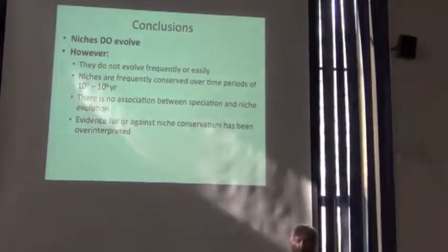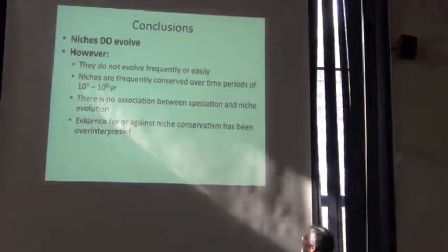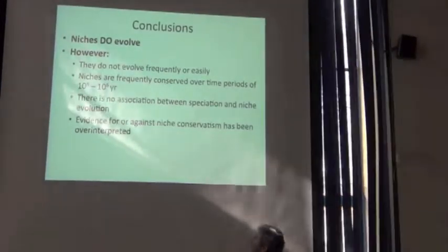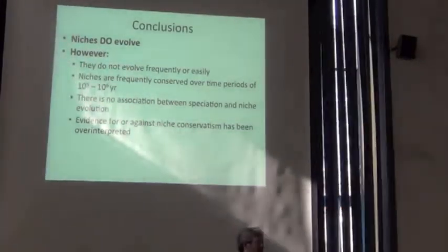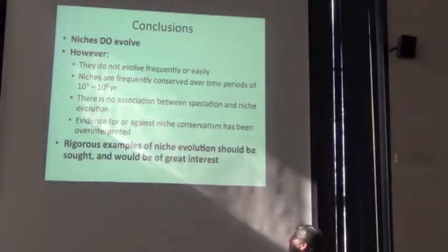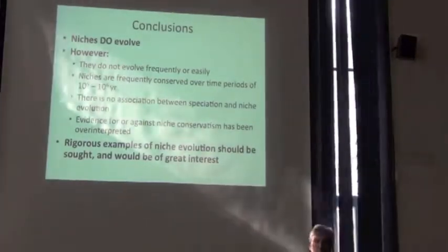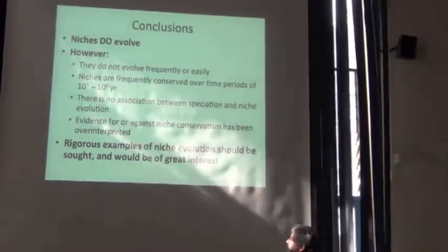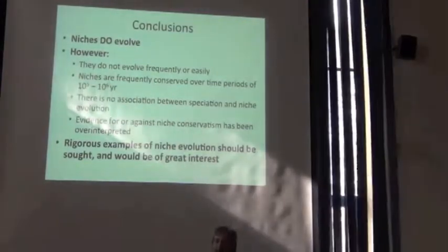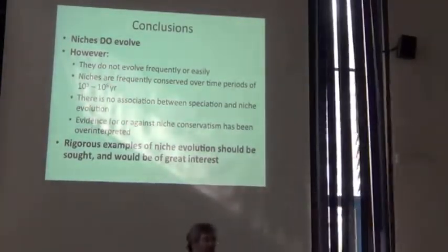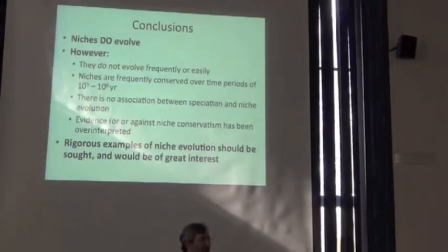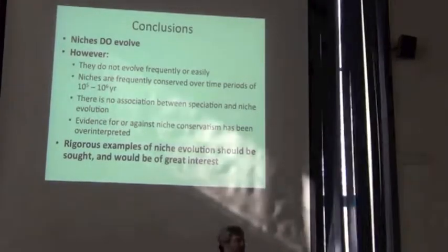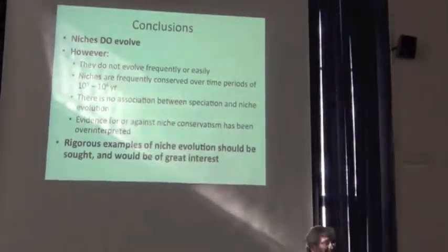Remember, I'm talking in core screen environmental dimensions. The evidence for or against niche conservatism has frequently been over-interpreted. And really, what we want is rigorously tested, well-established examples of niche change, because those would be passive. It would be really, really straightforward. But we have to get rid of the examples that are probably just consequences of the methodological hardback.